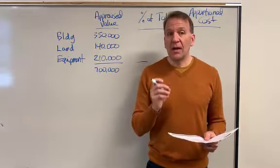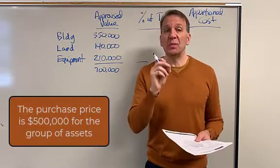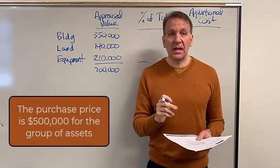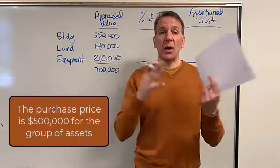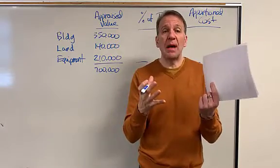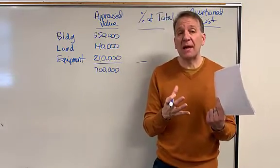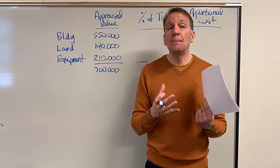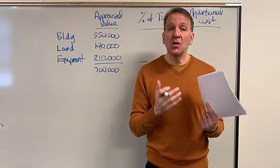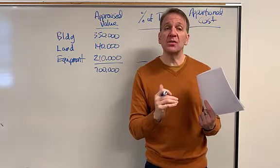But now remember, we need to separate this between the building, land, and equipment because each of those items depreciate differently. We can't just have one big lump sum amount of $500,000. We have to allocate that $500,000 purchase price between those three assets so that we can depreciate each one differently.